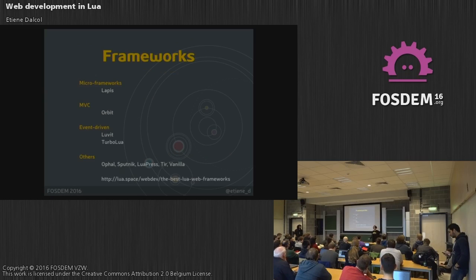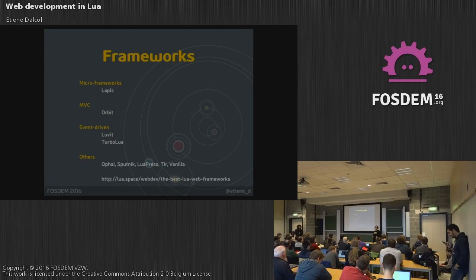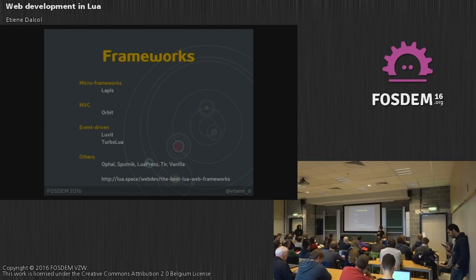We also have frameworks of various kinds: micro frameworks, MVC, event-driven. I like to call attention to Lapis, which I would say is the Flask of Lua. It's a really nice framework with amazing documentation. It was originally built with Moonscript, which is a language that compiles to Lua, like CoffeeScript compiles to JavaScript. We have Orbit, which is pretty stable but has been a little bit abandoned recently.